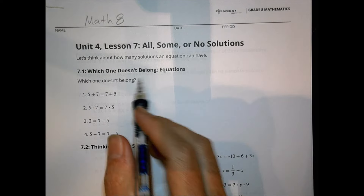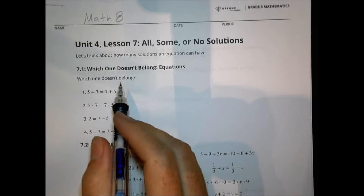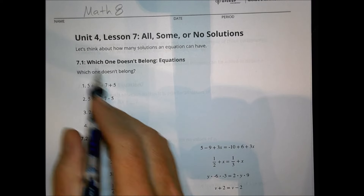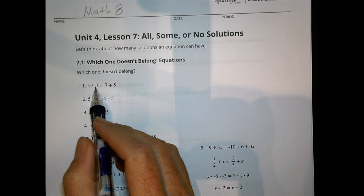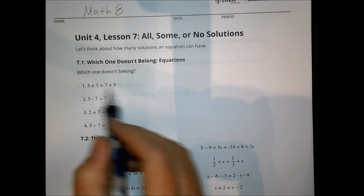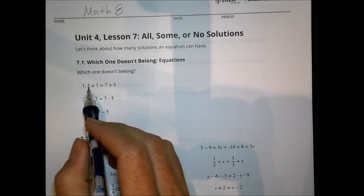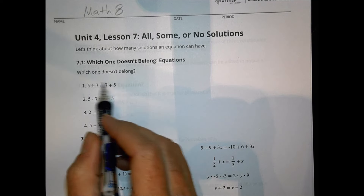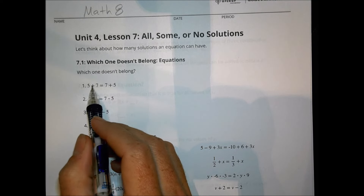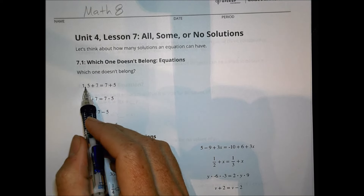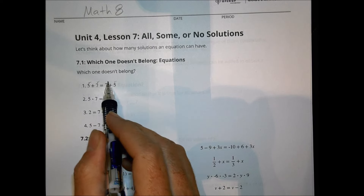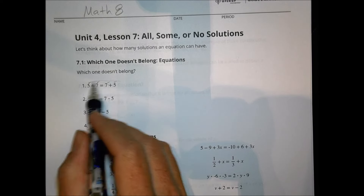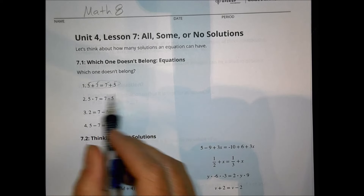How many can they have? Alright, so which one doesn't belong? First of all, we'll take a look at these equations here. We have to decide which one doesn't really fit or work with a pattern here. We notice on number one they both have a 5 and a 7, so that seems to be okay.